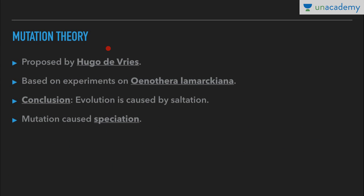Mutation Theory was proposed by Hugo de Vries. He proposed the Mutation Theory of Evolution based on experiments on Oenothera lamarckiana, which we also call Evening Primrose, and proposed this theory.